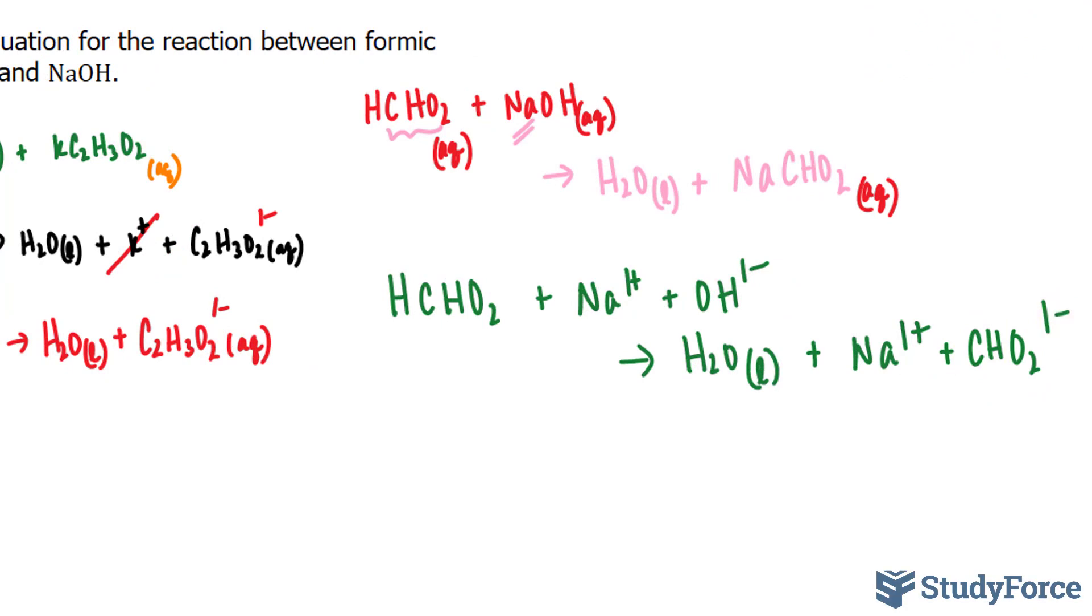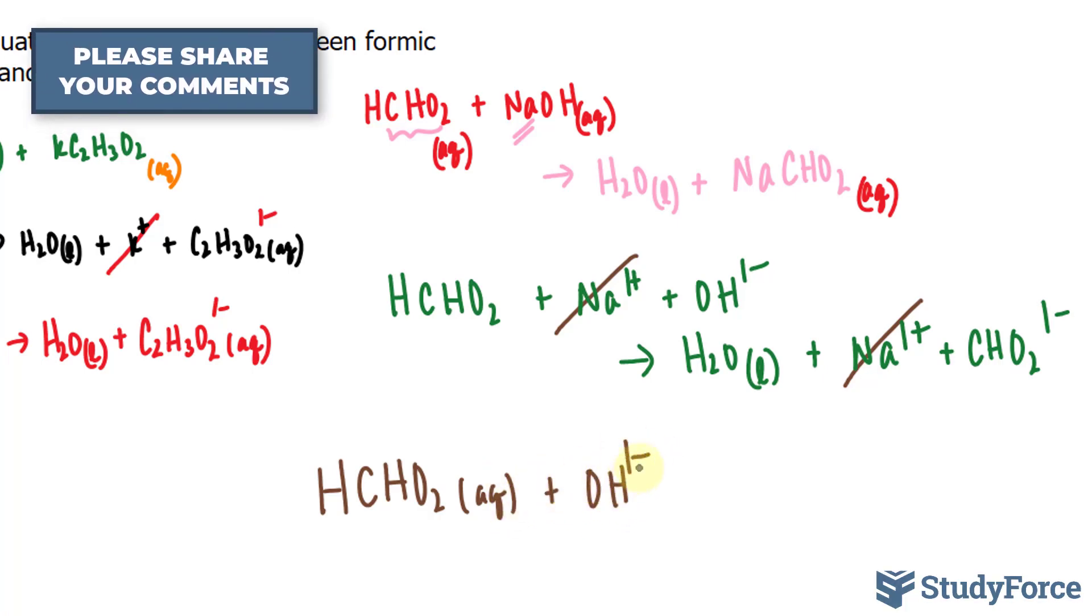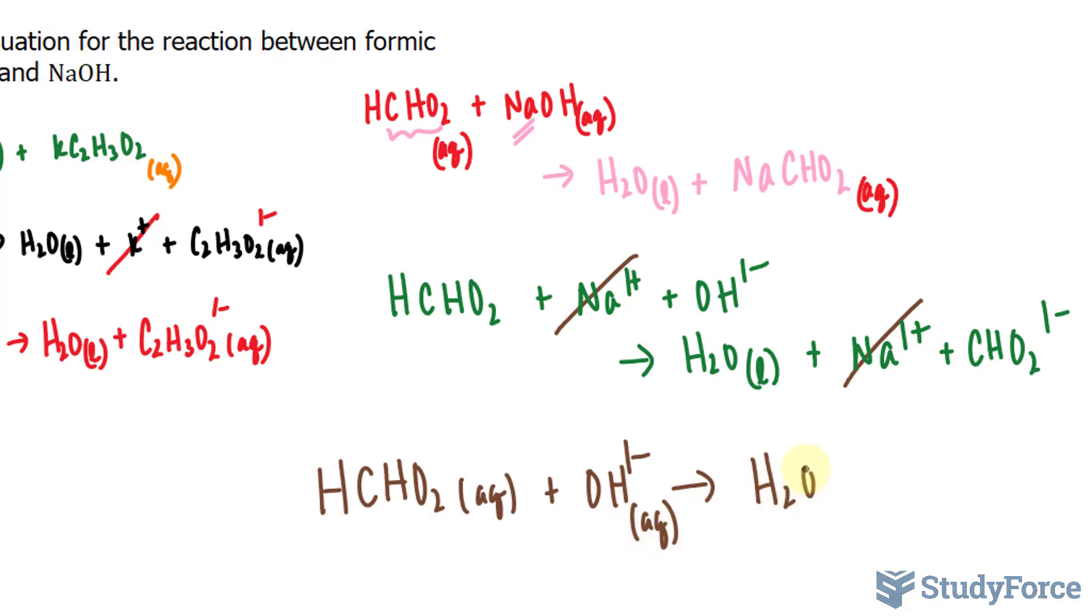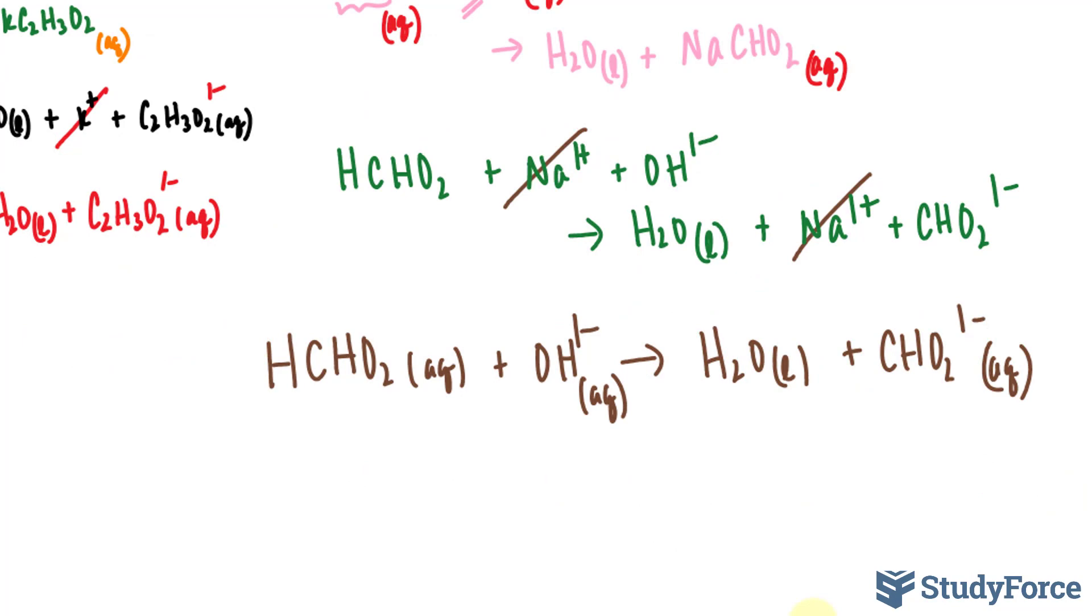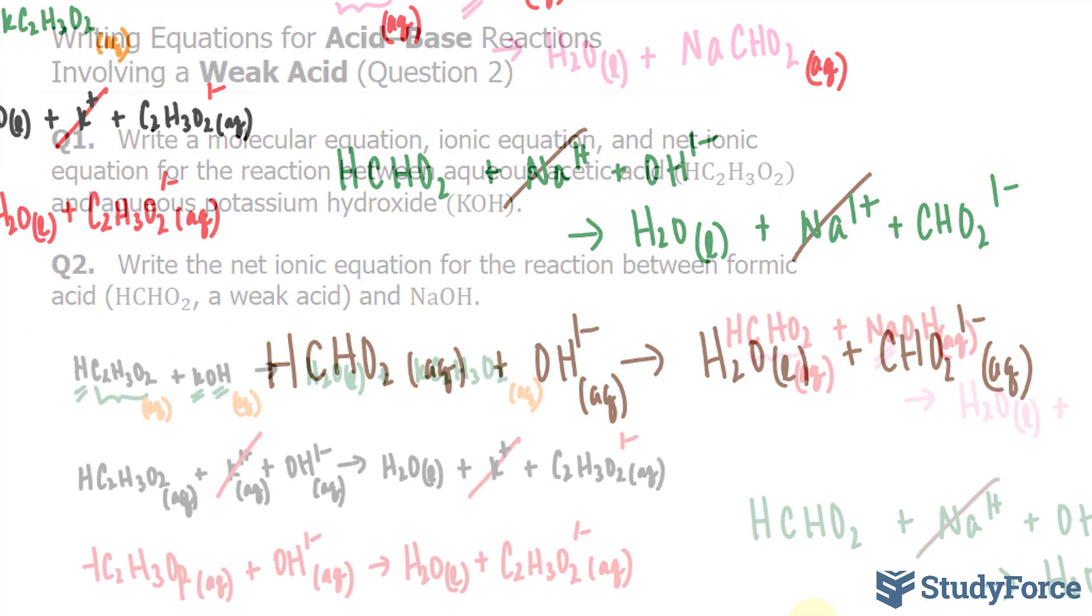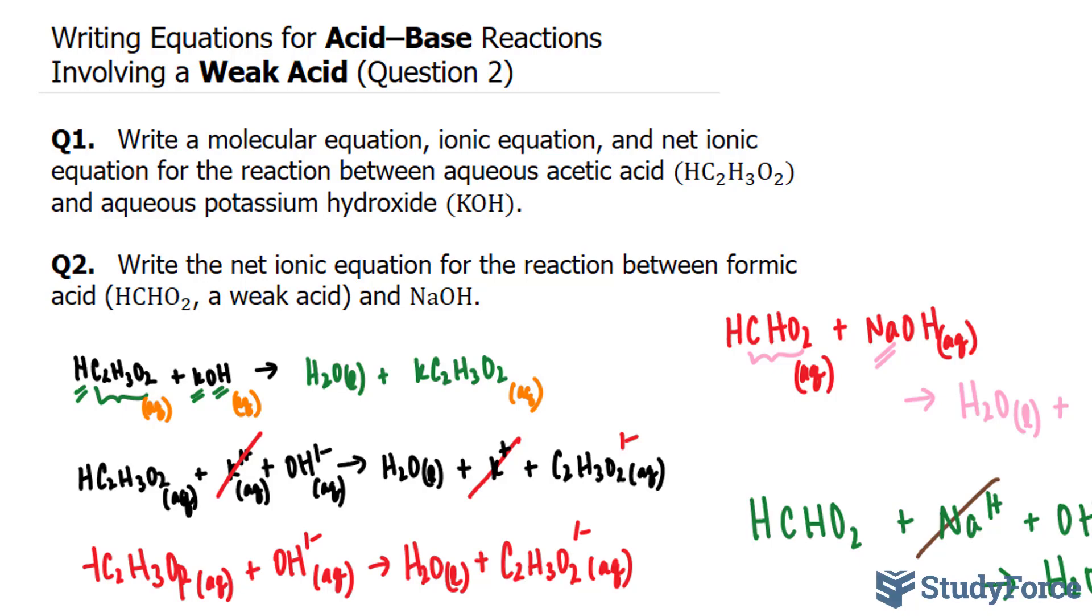Now we have to get rid of our spectator ions. Notice we have a sodium ion on the right side and one on the left side. Everything else on the other hand will stay where it is. So for our net ionic equation, we have HCHO2 aqueous plus OH one minus, this yields H2O and CHO2 one minus. That right there is the answer to question number two, and that is how to write equations for acid-base reactions involving weak acids.